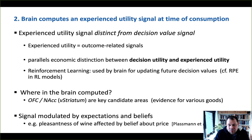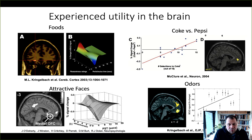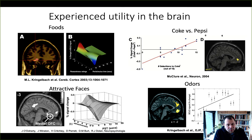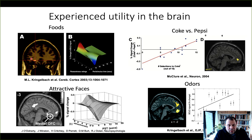We'll talk about some studies next, including one famous study that looked at the pleasantness of wine, which is affected by the belief about the price. In the first example, a study looked at pleasantness of liquids given to participants in the scanner and correlated it with activity in the lateral region of the orbitofrontal cortex. The BOLD percent signal change decreases for unpleasant ratings and increases for pleasant ratings — so this region correlates with how pleasant you rate something.